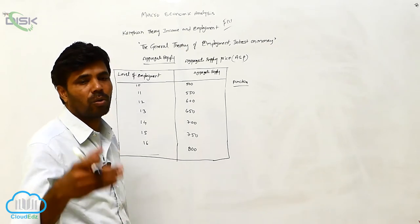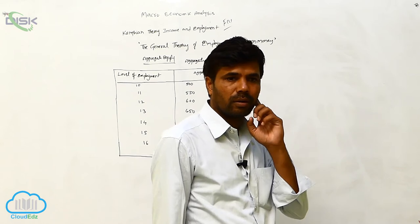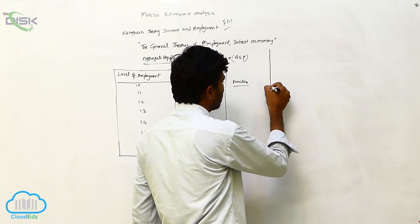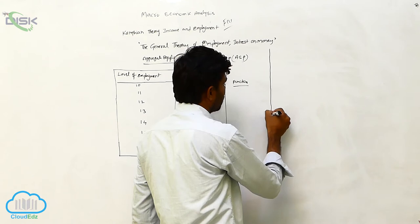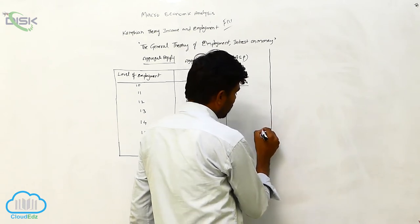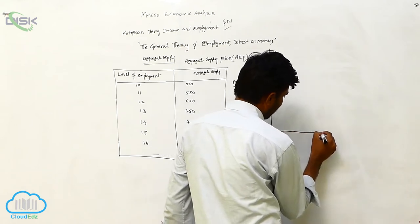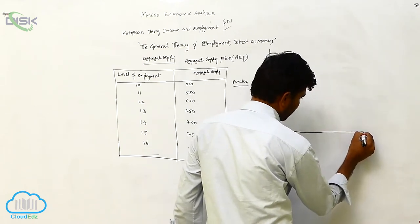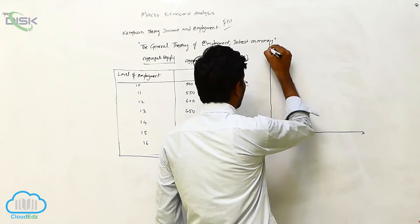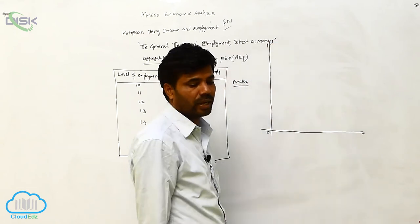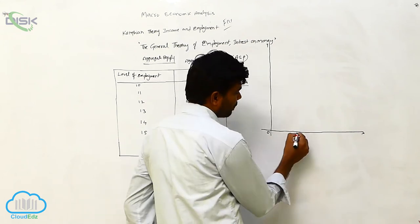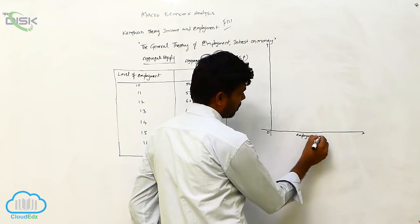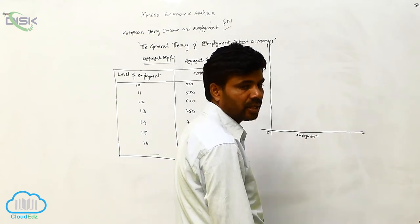Agreed is the aggregate supply function. Now we can draw the diagram. Here, on the OX axis we are going to consider employment, and on the OY axis we are going to consider aggregate supply price.